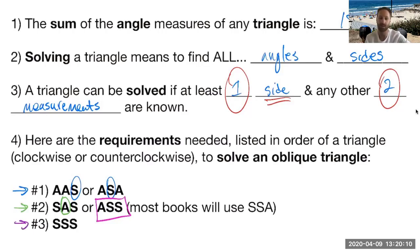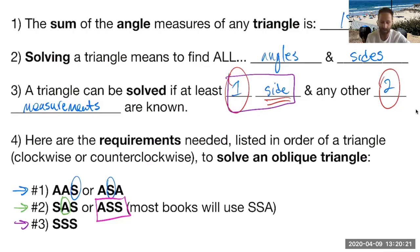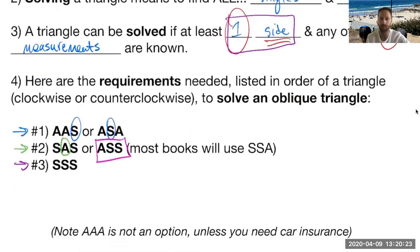Notice there is one scenario that is left out, and that is angle-angle-angle, because we said the requirement is we have to have at least one side in order to solve these. Angle-angle-angle will only work to find similar triangles. So unless you're going to need car insurance, we cannot use AAA. At least one side, and we'll go through examples to make sure we understand how to find these.